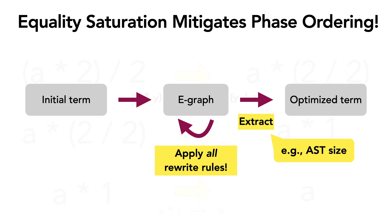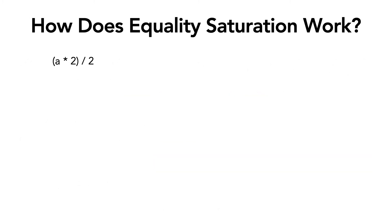Equality saturation instead takes a different approach to rewriting. It uses a data structure, called an e-graph, to store all equivalent terms obtained by applying the rewrites without adhering to a specific order. After applying the rules up to some termination condition, like a time out or for example saturation, the final program is extracted based on some cost function.